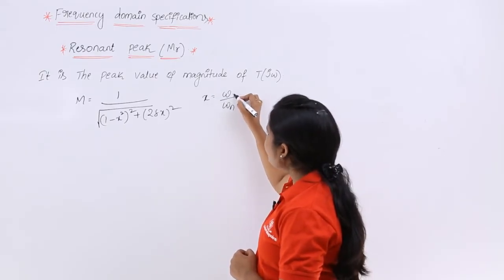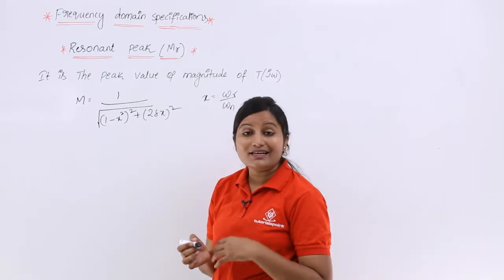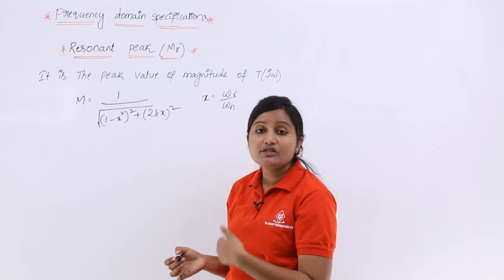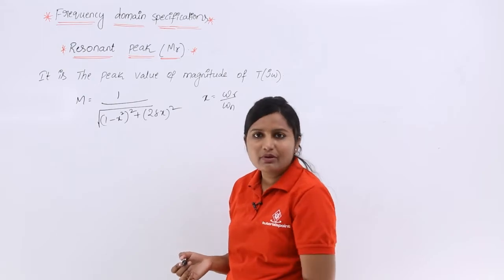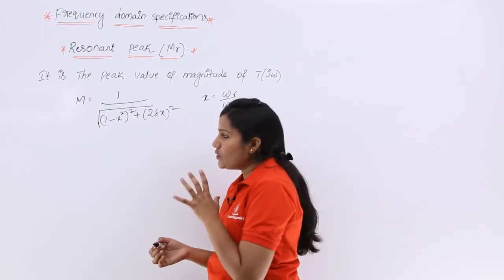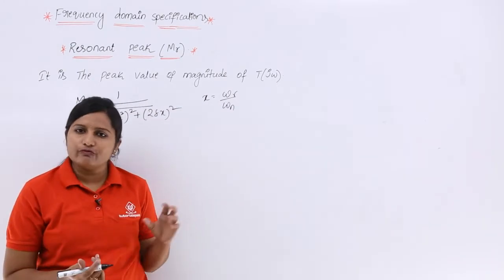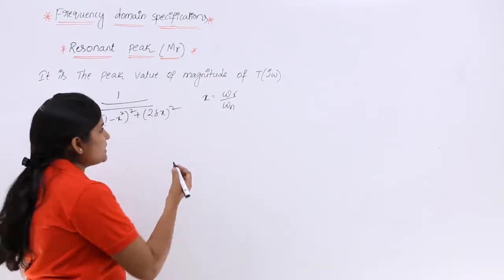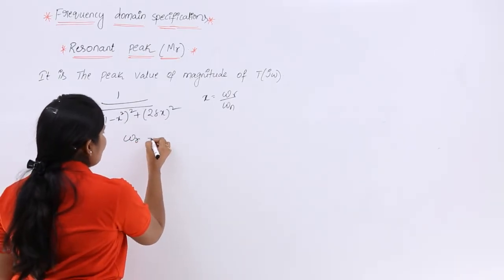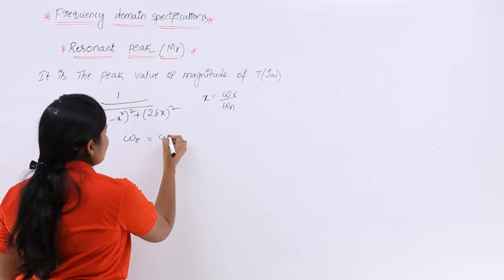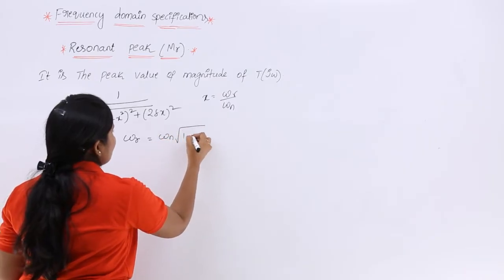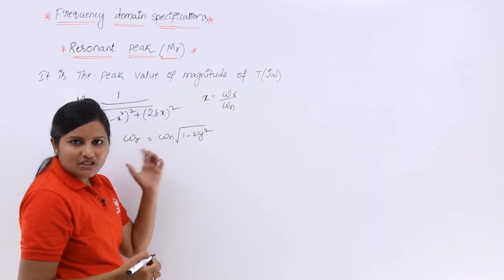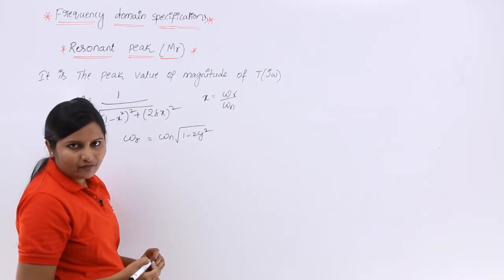Whenever your frequency is the resonant frequency, then you will get the resonant peak — that means you will get the maximum value of magnitude. In the last video we calculated the equation for resonant frequency as omega r equals omega n times root of (1 minus 2 zeta squared). So this is the equation for resonant frequency.